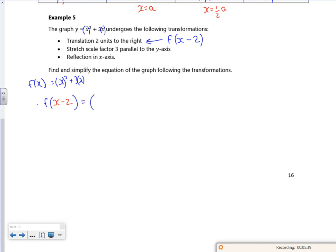So the first bullet point is f of x minus two, which is that. Then it says scale three parallel to the y axis, so that's three lots of f of whatever it was.